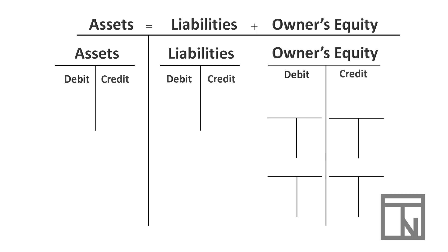The key to understanding debits and credits is to remember which of the two numbers increases or decreases any category. As we begin recording transactions, we'll be recording each account as either a debit or a credit depending on whether they increase or decrease.